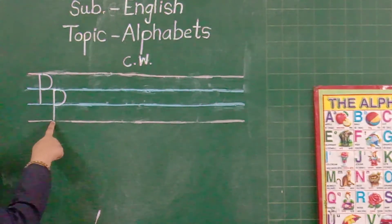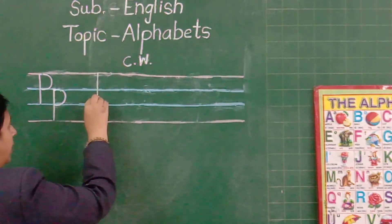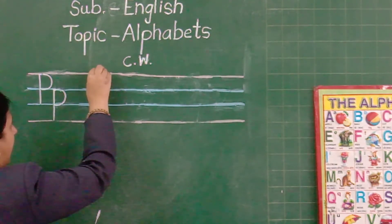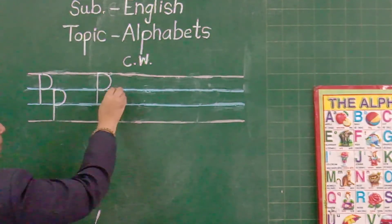Capital P and small p. Again, look here. Capital P. Standing line. Curl. This is capital P.